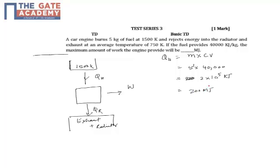Now, what is asked is, what is the maximum amount of work that can be done? Maximum amount of work is possible when you have the best possible cycle between 1500 K and the exhaust which is assumed to be 750 K.